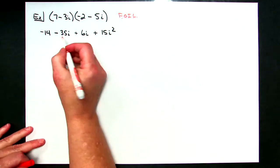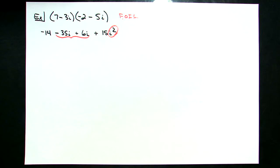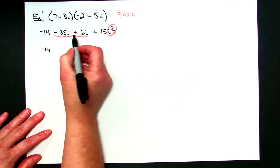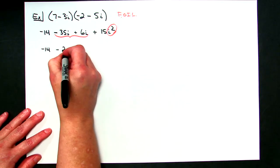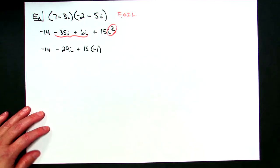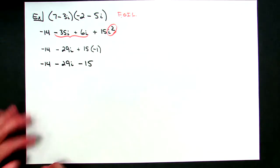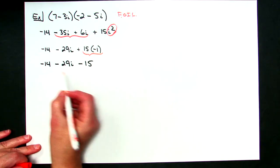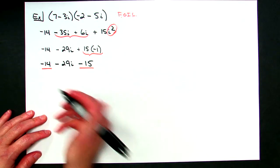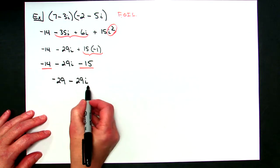That's straight FOILing. From there I can find like terms, and I've got an i squared which I must replace with negative 1. Negative 14 comes straight down. Negative 35i plus 6i gives minus 29i. Replacing i squared with negative 1: 15 times negative 1 gives minus 15. Now combining like terms: negative 14 minus 15 is negative 29. Putting it in standard form: negative 29 minus 29i. That's A plus Bi form.